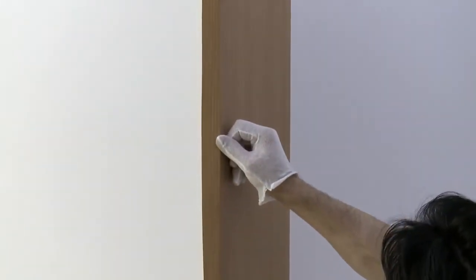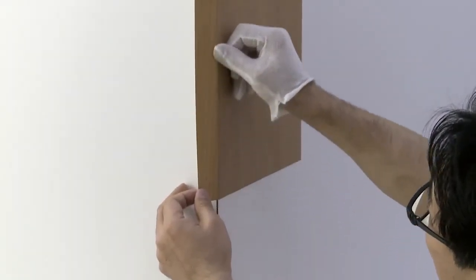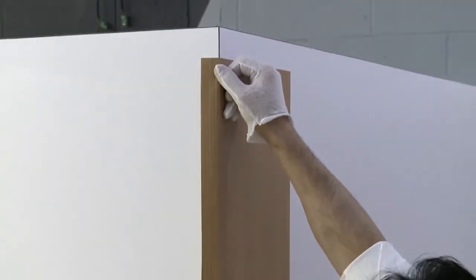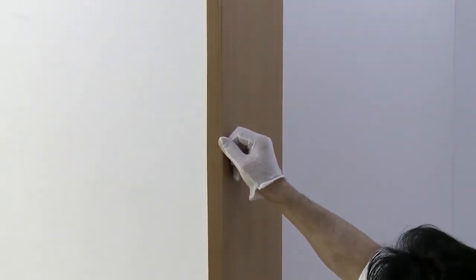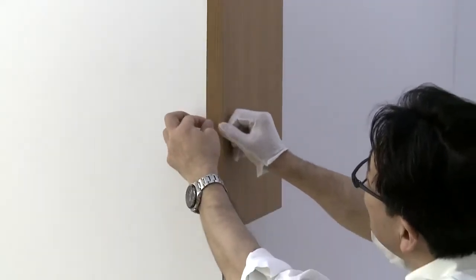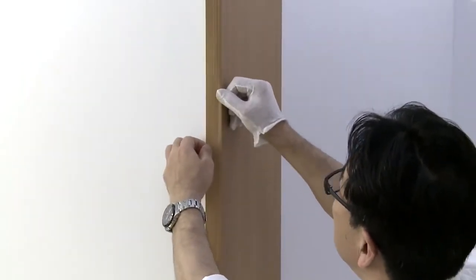Work this edge up and down 2 or 3 times. Continue working the film up and down while rolling your thumb slightly over the edge of the corner and maintaining some tension on the unapplied film.